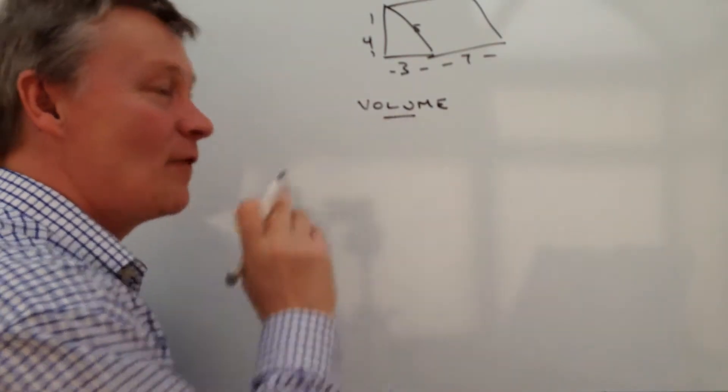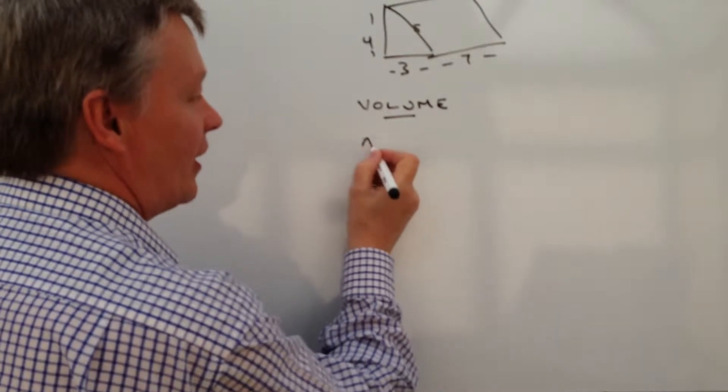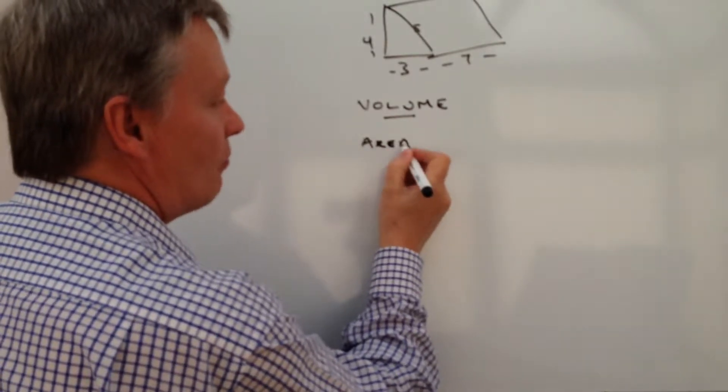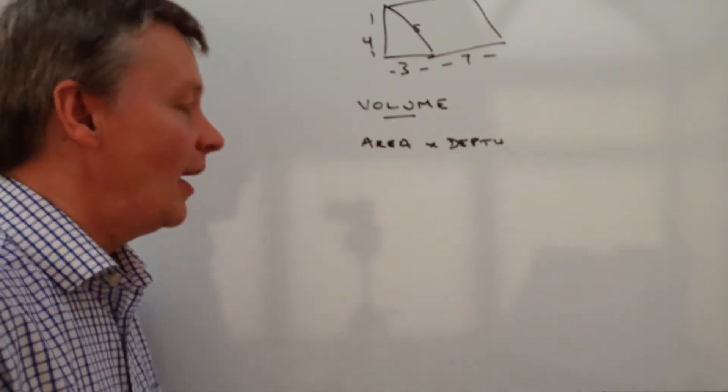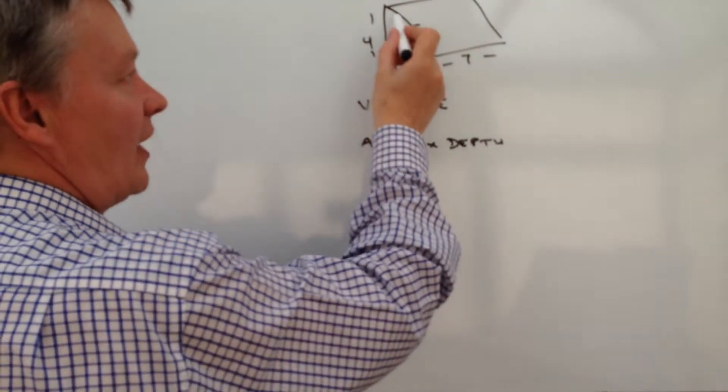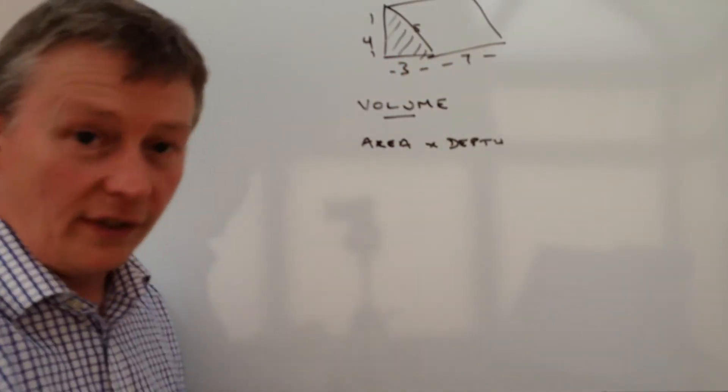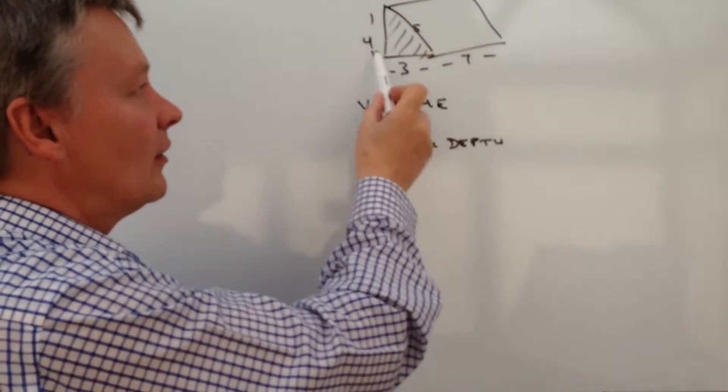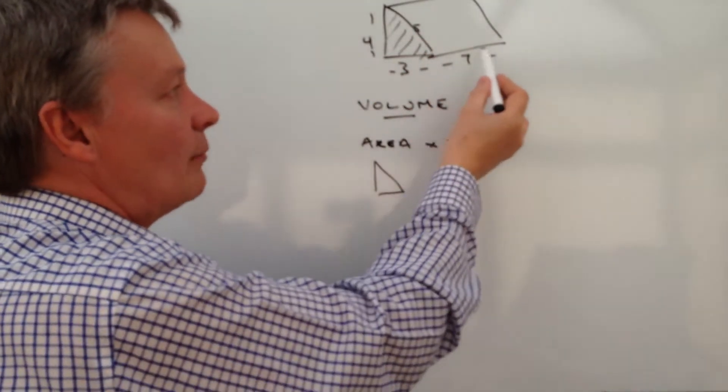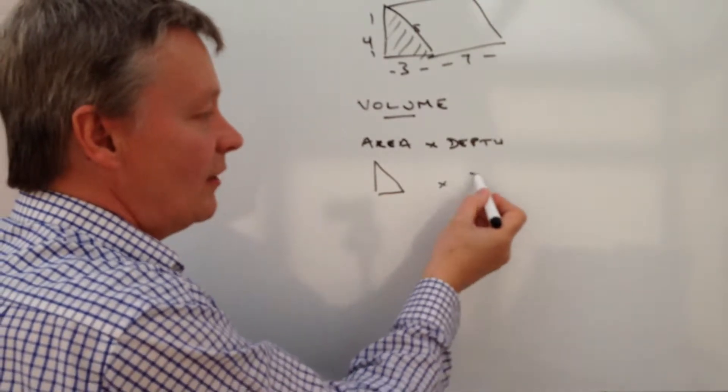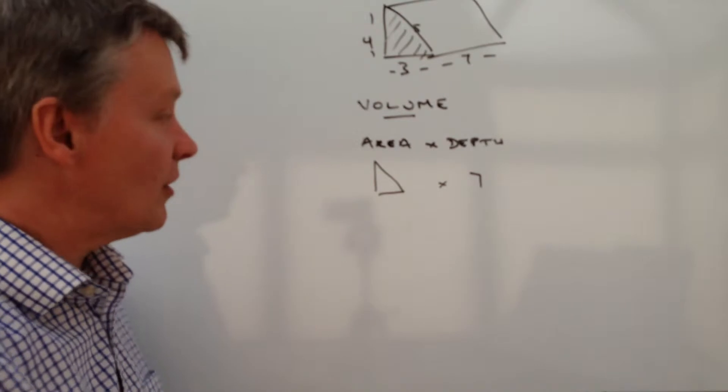So what we need to do is work out the volume. Well the way to work out the volume is we look at the area multiplied by the depth. So if we look at the area here, it's this triangle. So what we're doing then is taking this triangle, working out its area, and then we're going to multiply it by 7 which is the depth of this particular box.